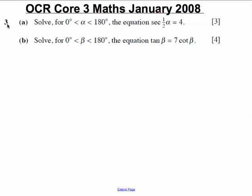Hi there, the following video will solve question 3 part b of the OCR core 3 maths January 2008 past paper. The question asks us to solve for beta between 0 and 180 the equation tan beta equals 7 cot beta.